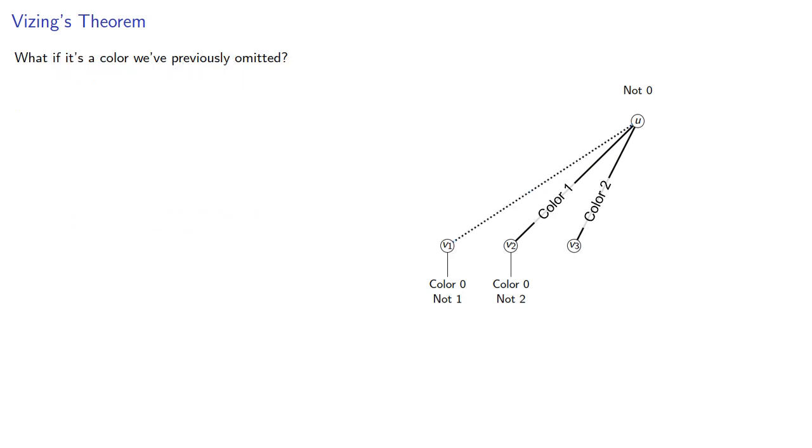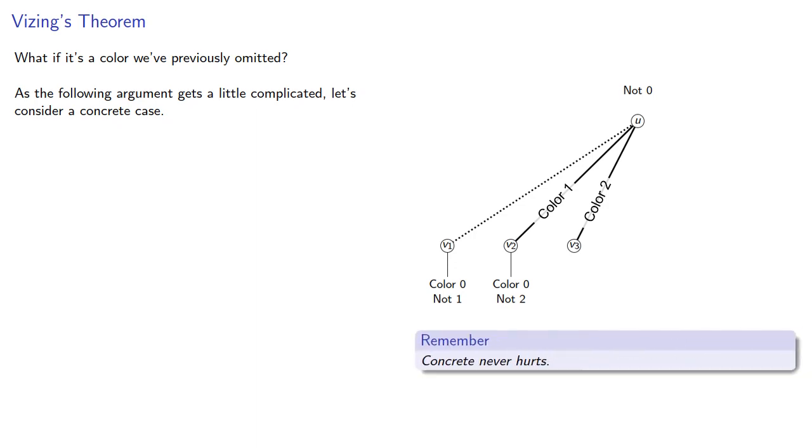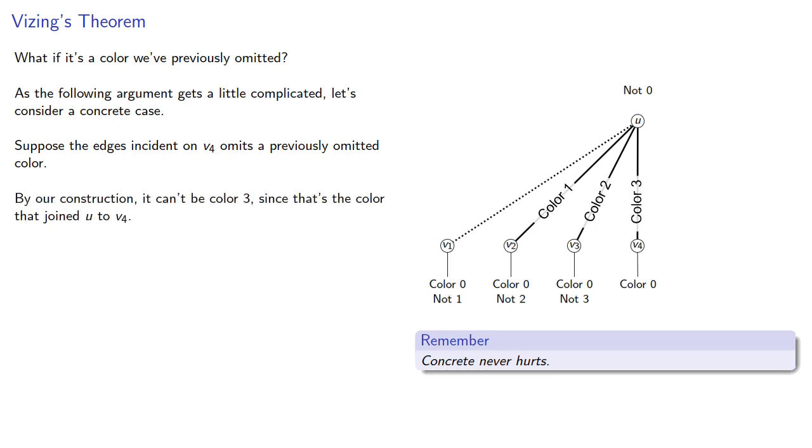What if it's a color we've previously omitted? As the following argument gets a little complicated, let's consider a concrete case. Remember, concrete never hurts. So suppose the edges incident on v4 omit a previously omitted color. By construction, it can't be color 3, since that's the color that joined u to v4, so it's either color 2 or color 1. We'll assume it's color 2.